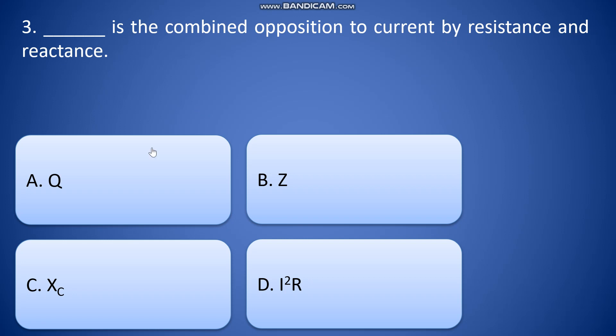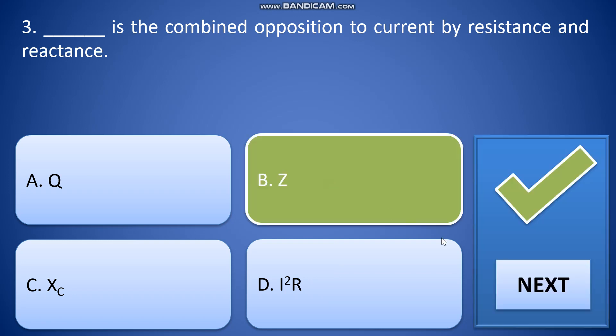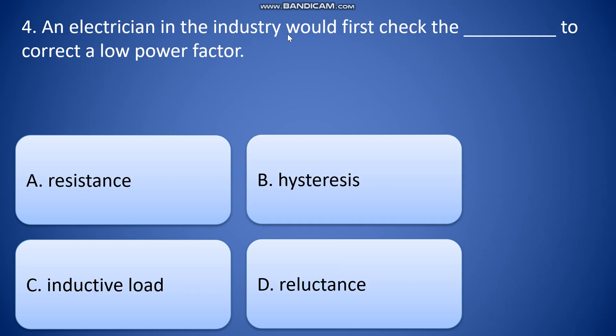Blank is the combined opposition to current by resistance and reactance. A: Q, B: Z, C: XC, D: I squared R. So the answer is letter B, Z. An electrician in the industry would first check the blank to correct a low power factor. So the answer will be C, inductive mode.